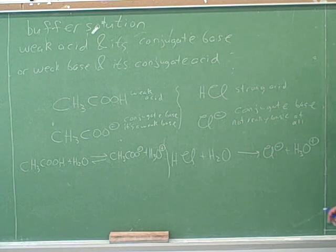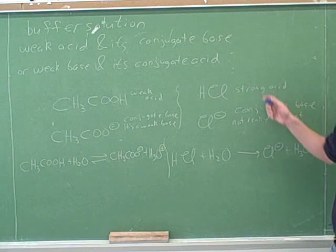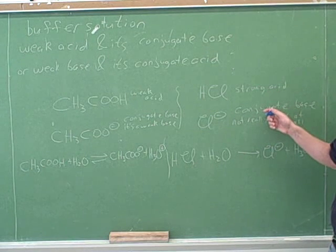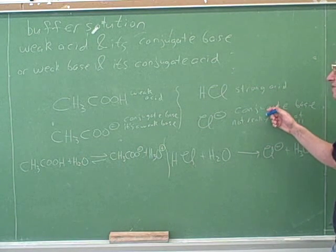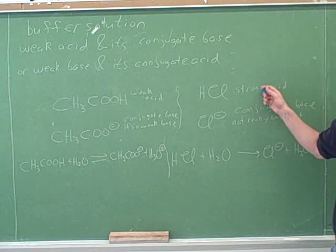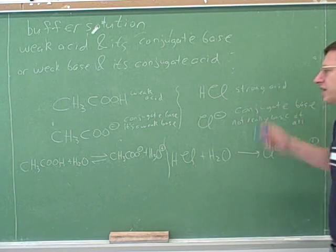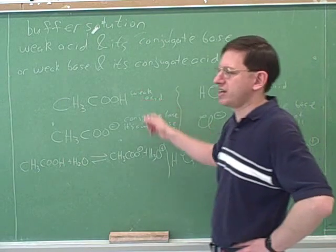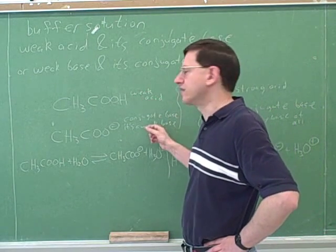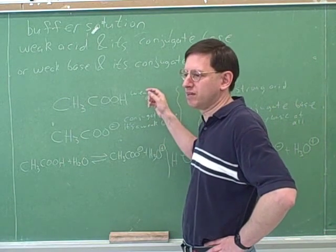So the key question: can we make a buffer out of a strong acid system? No — because we have a strong acid. Can we make a buffer out of the weak acid system? Yes — because they're both weak. We need both the weak acid and its conjugate.